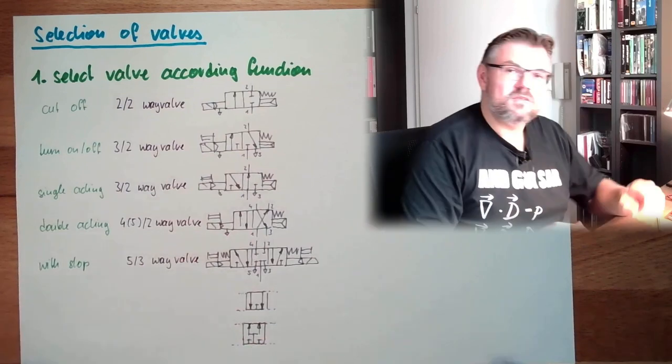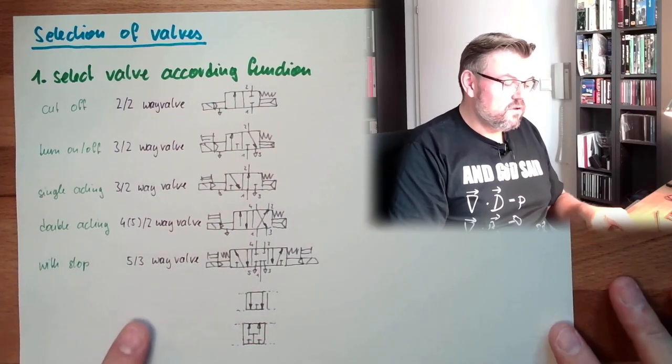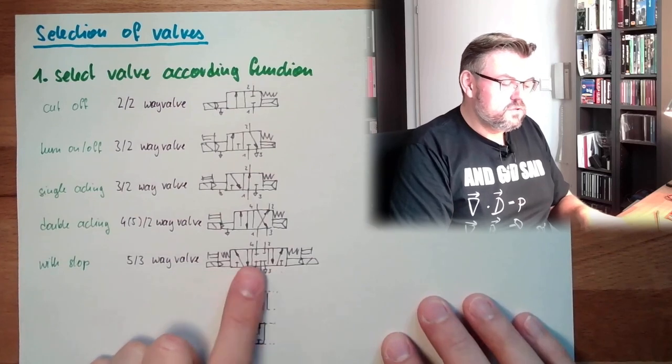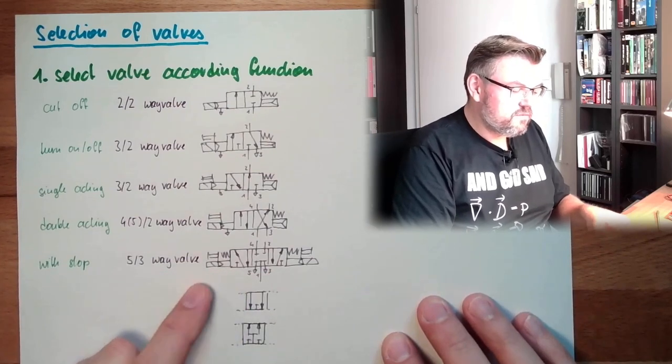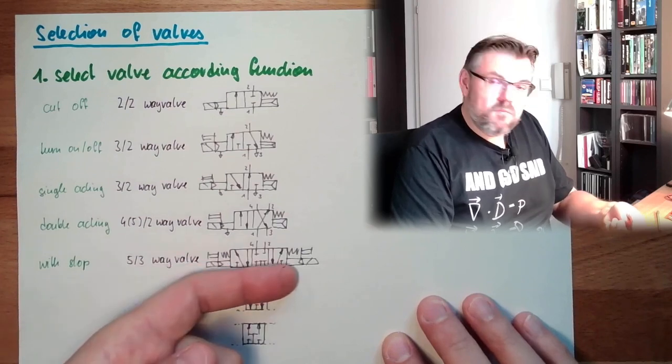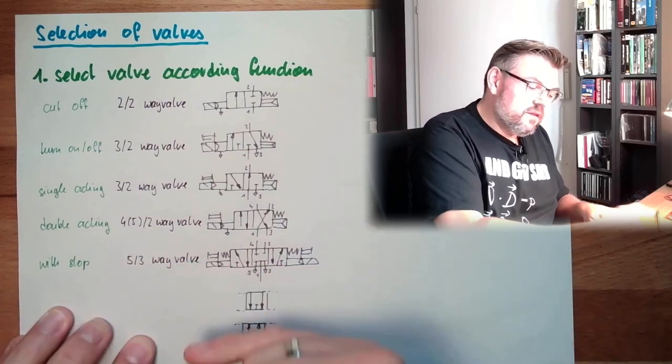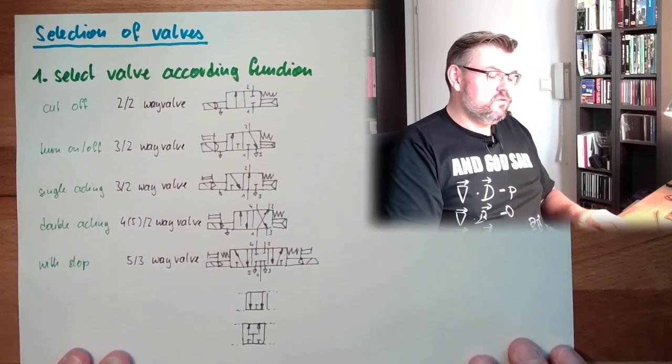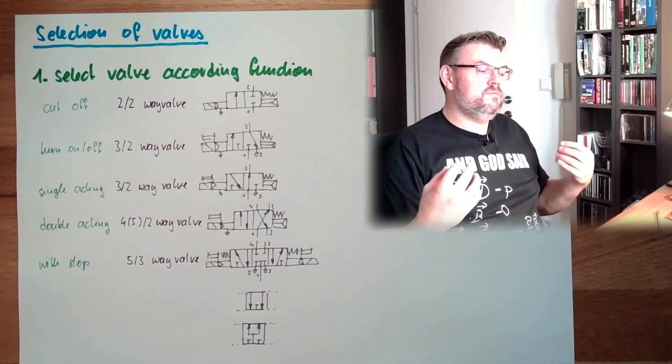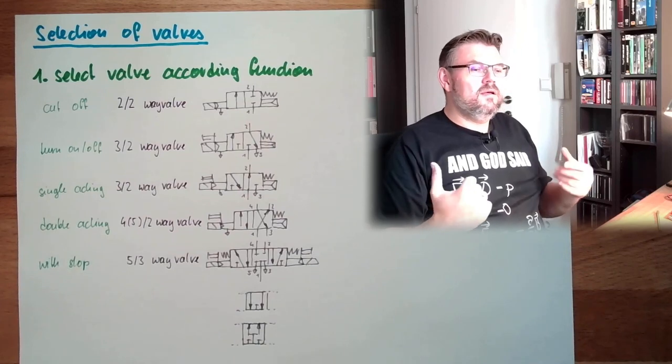If we need a stop in the middle somewhere, double-acting cylinder will stop, then we would use something like this, a 4/3 way valve, so that we can move it one direction, move it the other direction, or stop it at a certain position. Sometimes it's necessary to have...